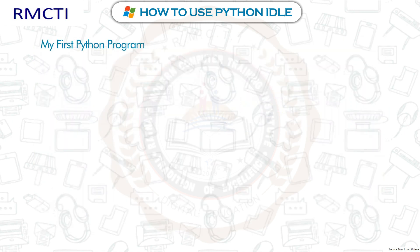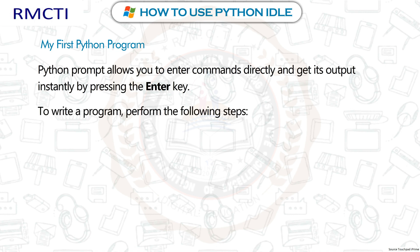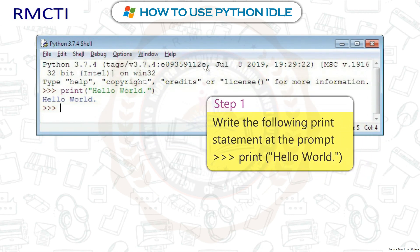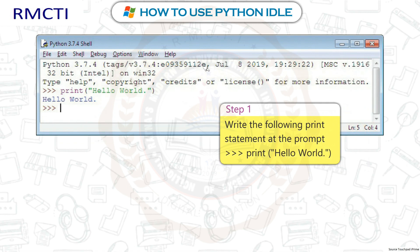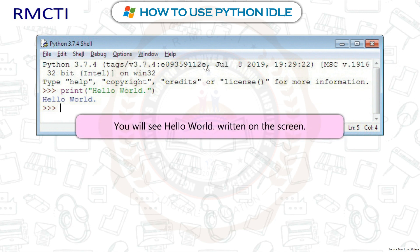My first Python program. The Python prompt allows you to enter commands directly and get output instantly by pressing the Enter key. To write a program, perform the following steps. Step 1: Write the following print statement at the prompt — print('Hello World'). Step 2: Press the Enter key. You will see 'Hello World' written on the screen.